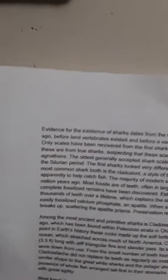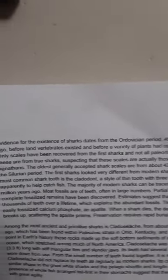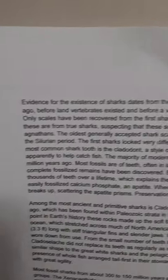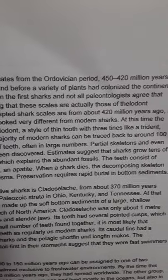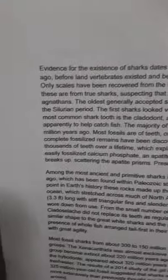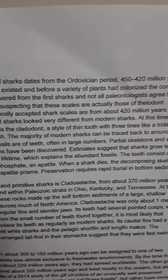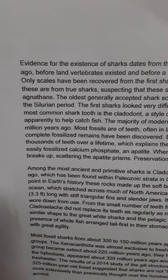Evidence for the existence of sharks dates from the Ordovician period, 450 to 420 million years ago, before land vertebrates existed and before a variety of plants had colonized the continents. Only scales have been recovered from the first sharks, and not all paleontologists agree that these are from true sharks, suspecting that these scales are actually from those of Thelodont agnathans.